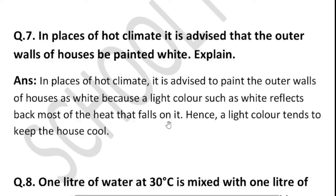In places of hot climate, it is advised that the outer walls of houses be painted white. The answer is: in hot climates, it is advised to paint outer walls white because light colors such as white reflect back most of the heat that falls on them.